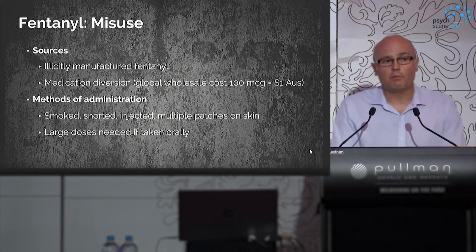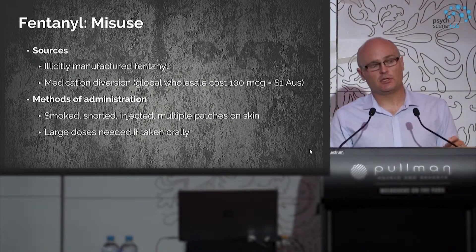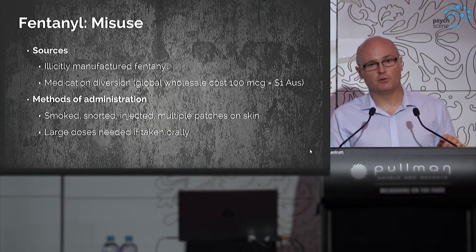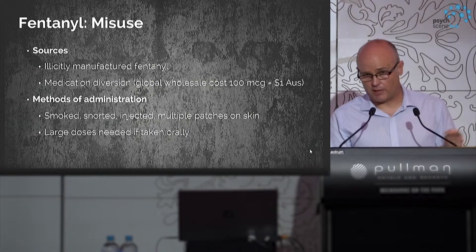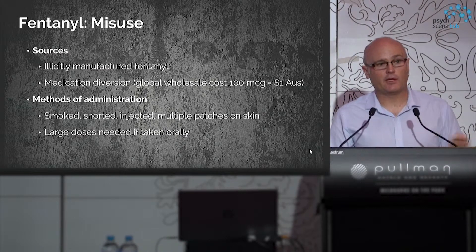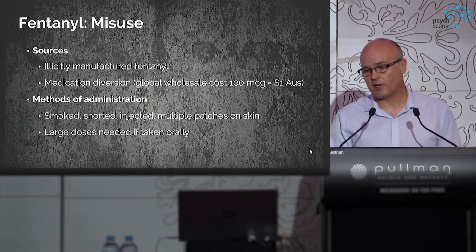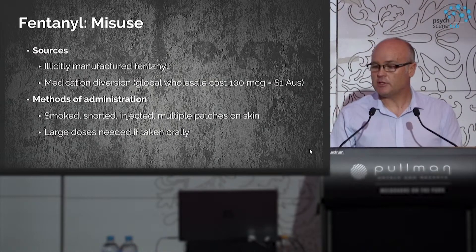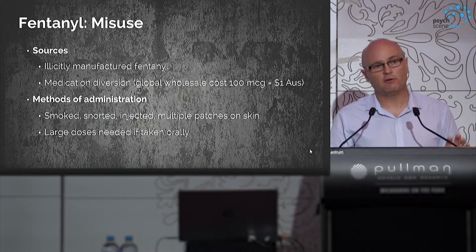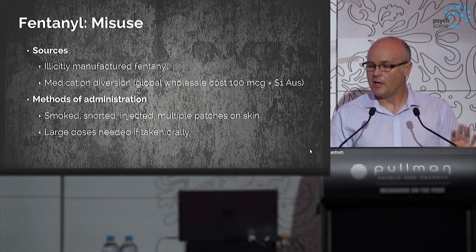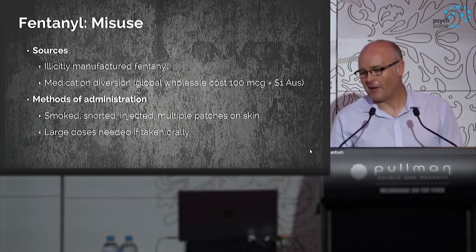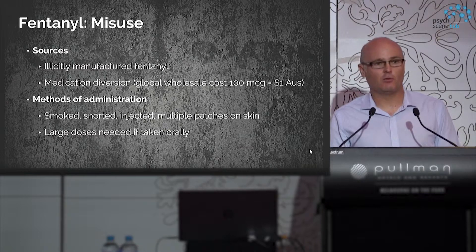In terms of sources in Australia, most of the fentanyl that's misused is thought to come from medicinal sources — that is, it's diverted. An example is stealing fentanyl patches from a rest home and extracting the fentanyl for use. In North America and Europe it's mainly illicitly manufactured fentanyl that's the problem. The wholesale cost of medicinal fentanyl is notable: 100 micrograms — an effective dose — costs only one Australian dollar.